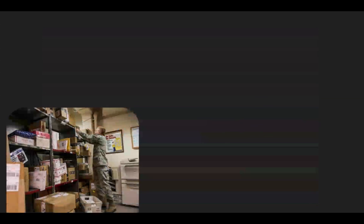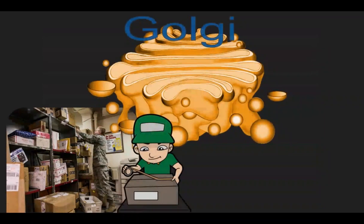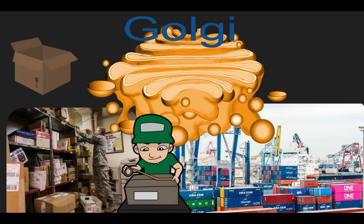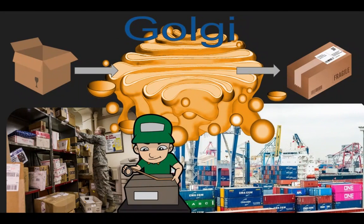If you're tracking a package, you'll be checking its status. But for shipping in the cell, you've got the Golgi apparatus. Like Amazon Prime, the Golgi packs it and exports it. Same day delivery, we're working towards it.